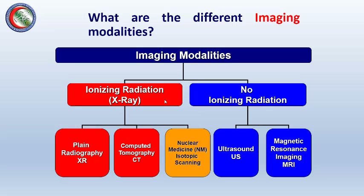Ionizing radiation is any radiation that has enough energy to break chemical bonds. One of the important chemical bonds in the body we don't want to break is the DNA. So if we don't use X-rays properly, we may cause cancers or mutations in upcoming generations.